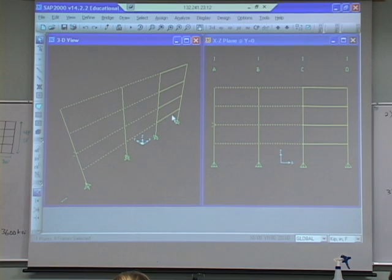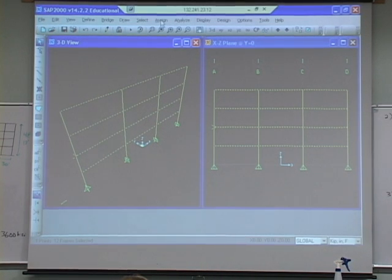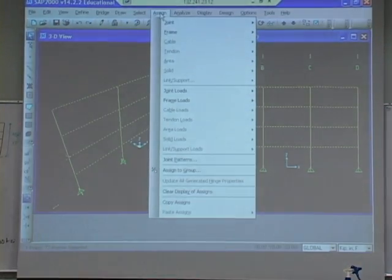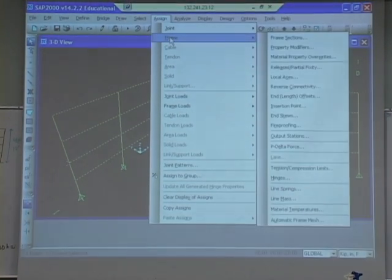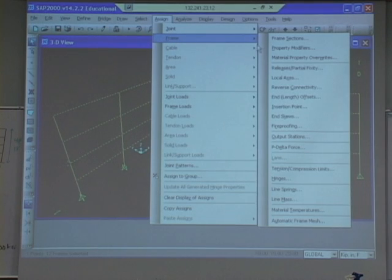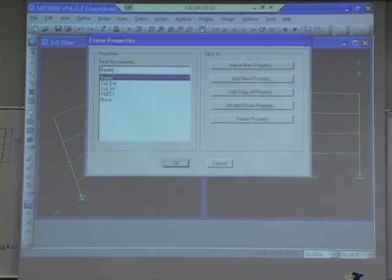What I'm doing here is selecting all the beams and then we're going to assign the beam cross-section which we've previously defined. To do that, we select all the beams, go to Frame, then Assign, then Frame, then Frame Sections to tell SAP what section is in that location.